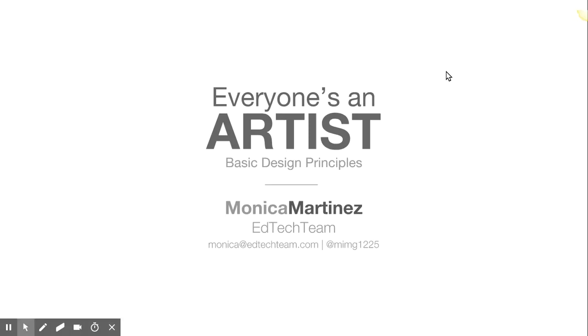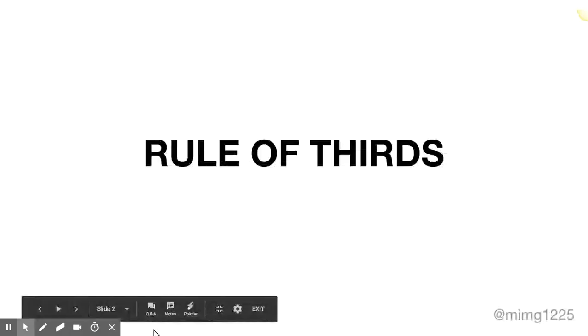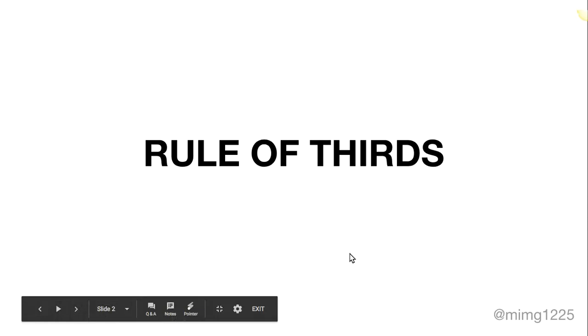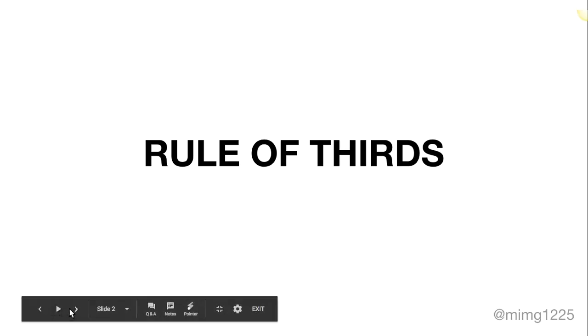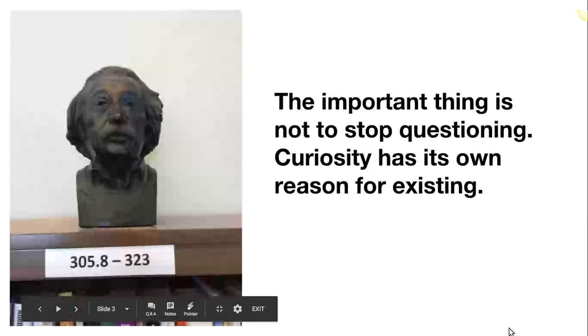Now, there are definitely a lot of design principles, but we're going to focus on a few to get us started. Let's start with the rule of thirds. The rule of thirds allows us to draw attention and decide where on the canvas — where on your slide — you're going to put your point of entry. Let's start with the rule of thirds and talk about the actual grid.